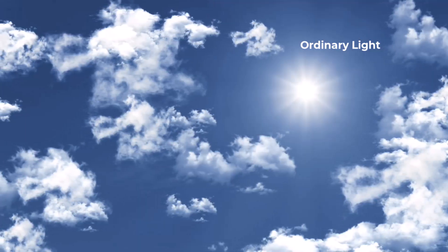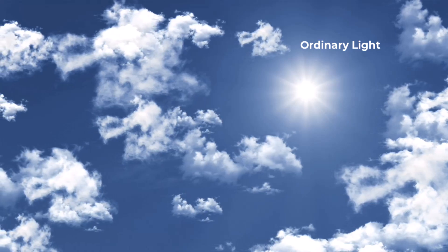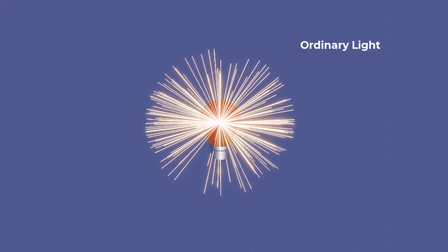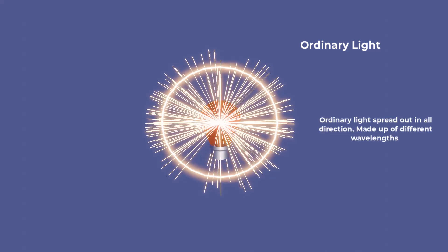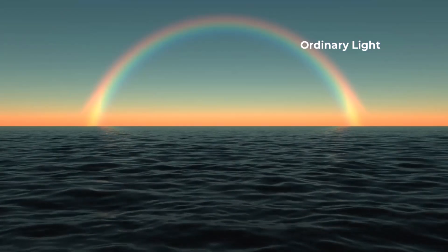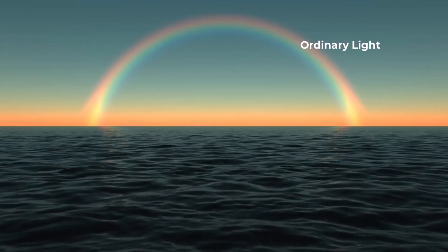Ordinary light is the everyday light we encounter from the sun, candles, bulbs, and many other sources. This light spreads out in all directions and is made up of many different colors, even if our eyes sometimes can't see them separately.